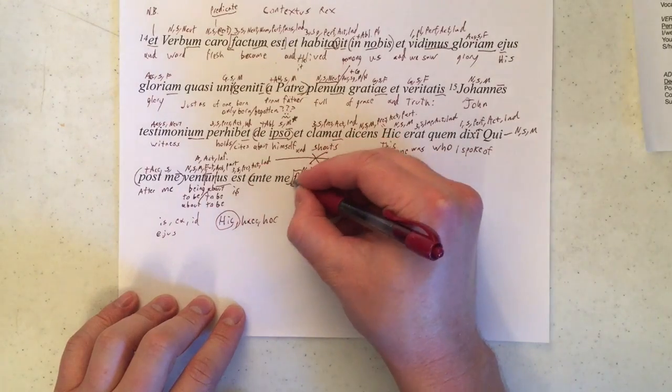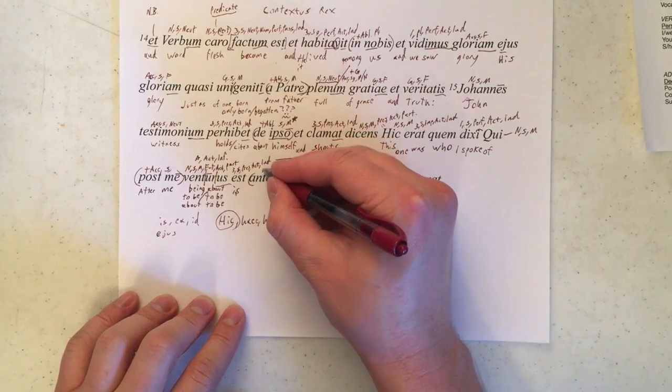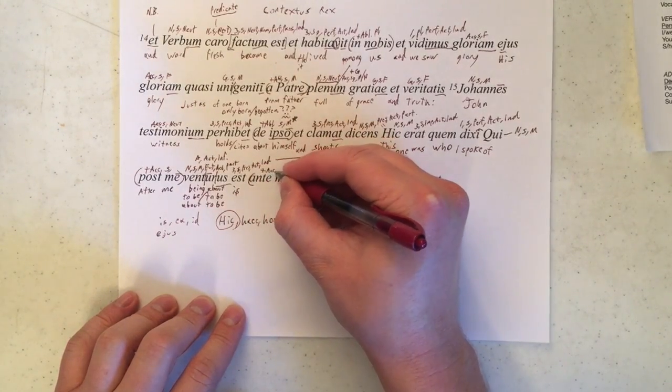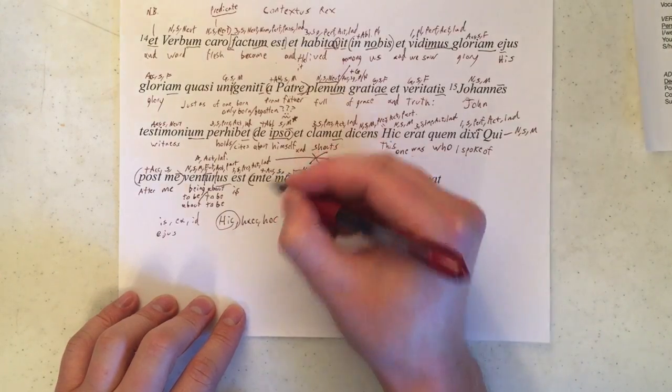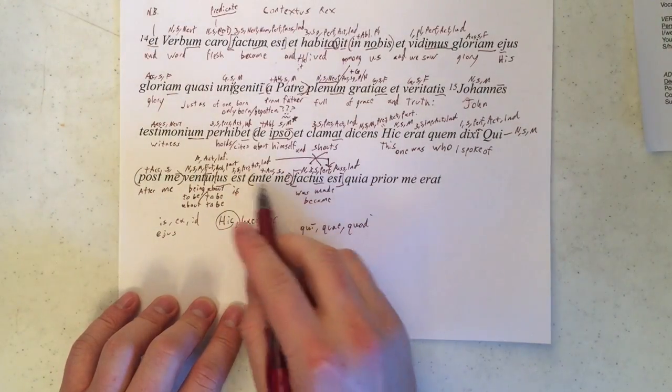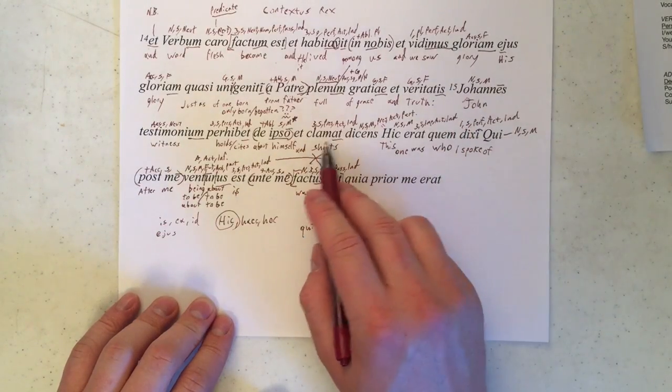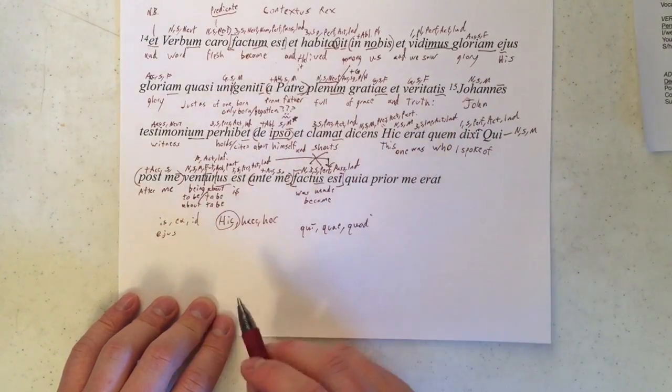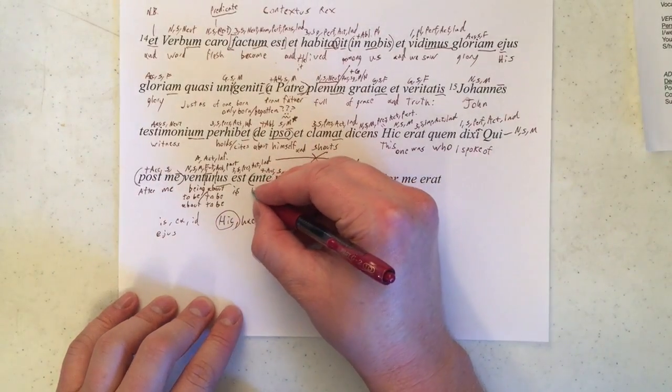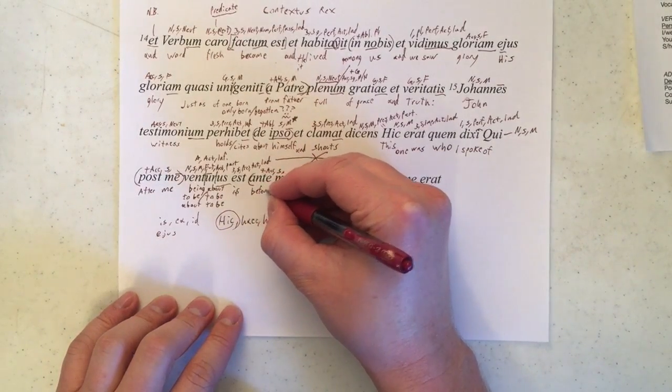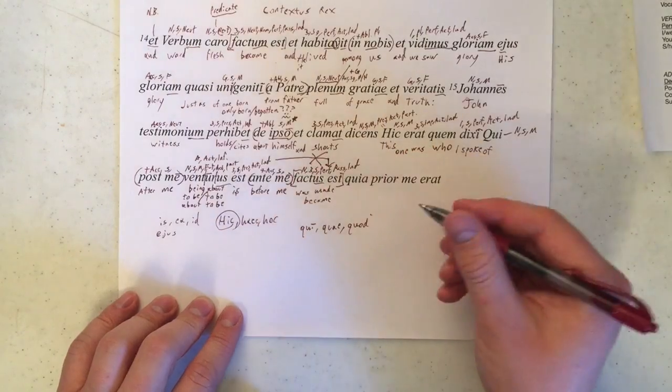Ante me, next prepositional phrase. Ante takes the accusative. This is singular. Again, we don't need to write down the gender, because we know this me is that me, and this me is naturally Ioannis, who is our speaker. And this means before me.